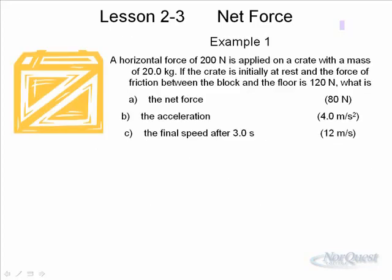Example number one: a horizontal force of 200 Newtons is applied on a crate with a mass of 20 kilograms. The crate is initially at rest, and the force of friction between the block and the floor is 120 Newtons. What is the net force? The applied force is 200 Newtons, the opposing frictional force is 120 Newtons, and therefore the net force is 200 plus negative 120, which gives you 80 Newtons.